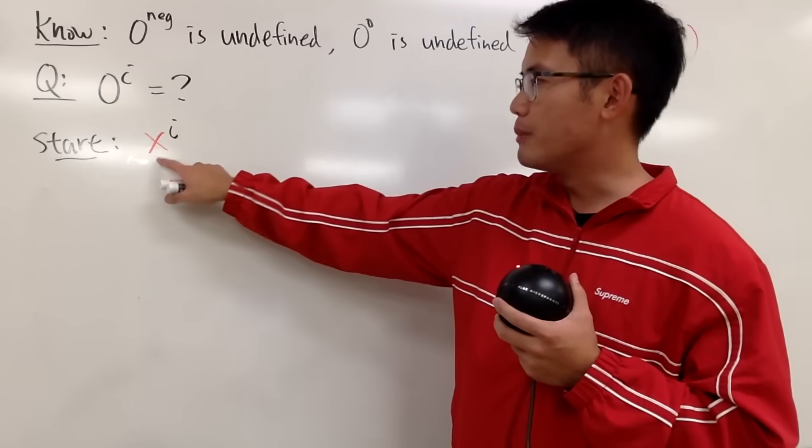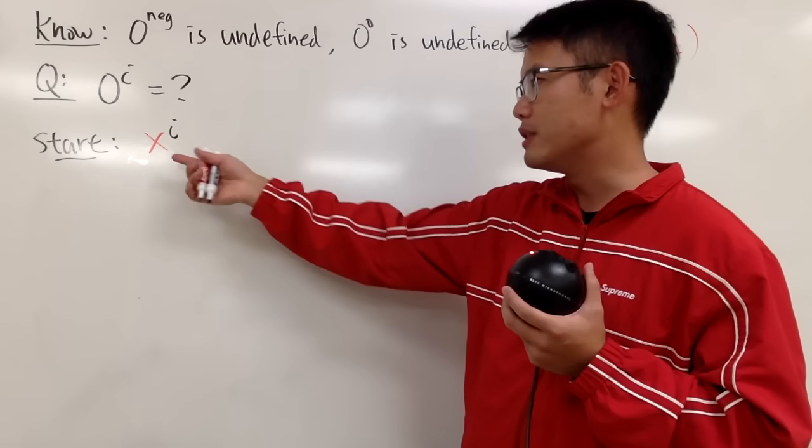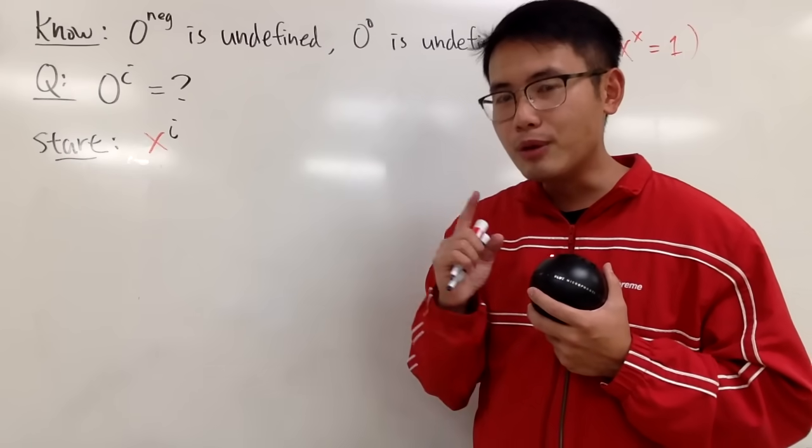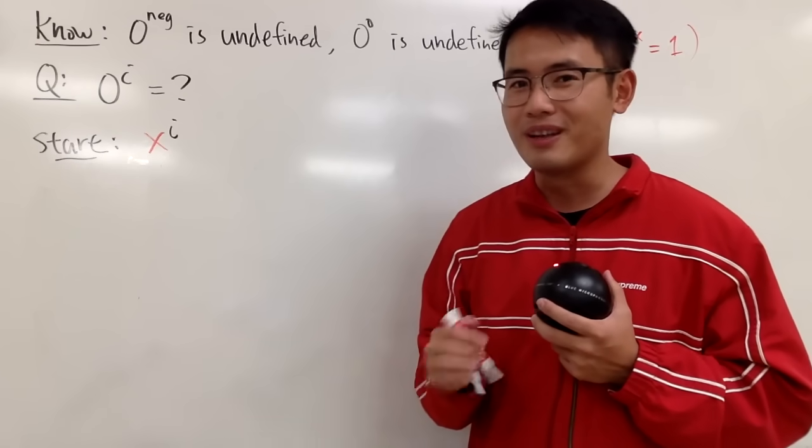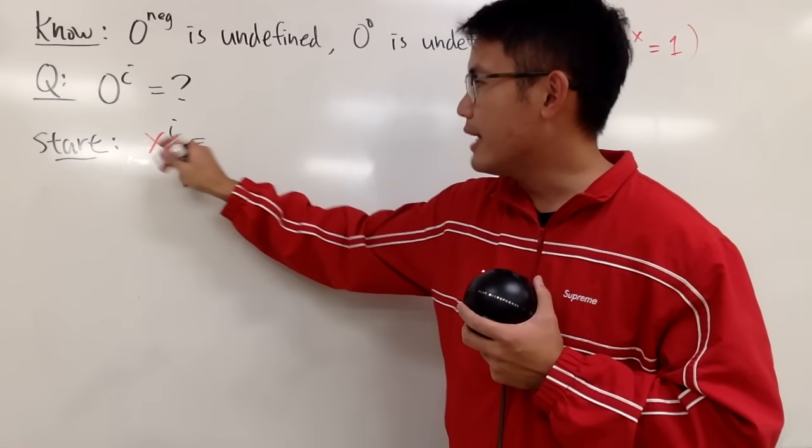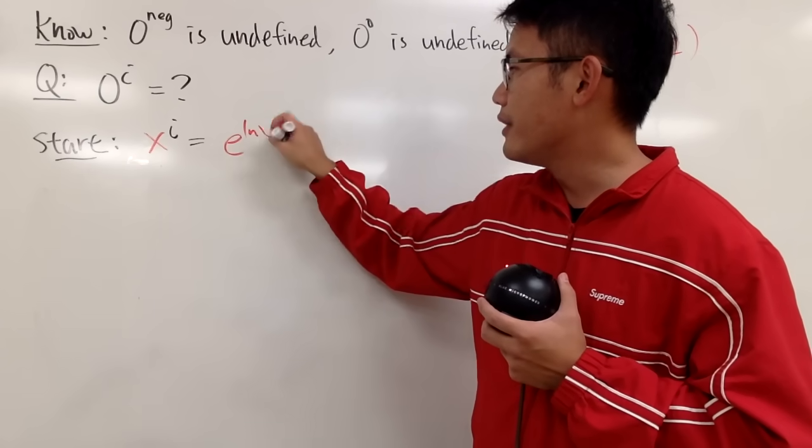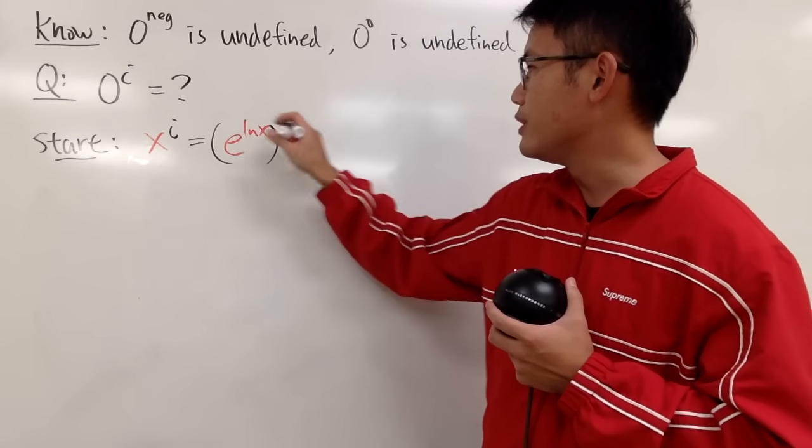But when we have a real number to imaginary power, I don't know how to deal with this because the base is x. I know how to deal with this if the base is e, so that I can use Euler's formula. Therefore, I'm going to look at this as the following. I will write x as e to the ln(x) power, because they cancel, you just get x, and then you raise that to the i's power like this.